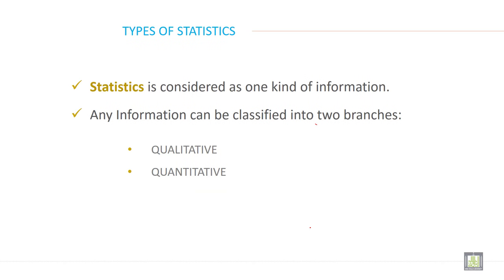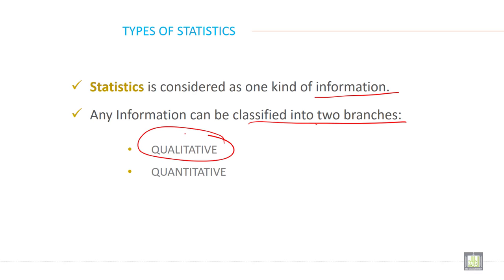Statistics is considered as one kind of information, and information is also called data. Any information can be classified into two branches: qualitative and quantitative.